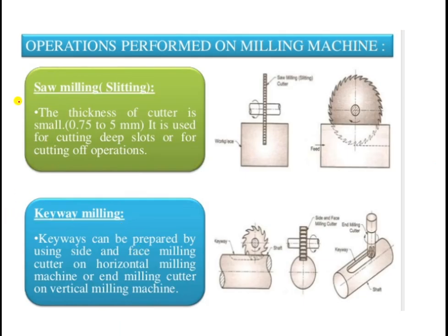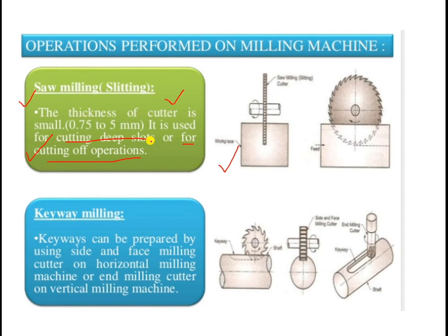Another operation is saw milling, which is a slitting operation used to create a certain separation in parts. The thickness of the saw milling cutter normally ranges from 0.75 to 5 millimeters. It is used for cutting deep slots or for cutting-off operations, but is generally used for cutting deep slots having a certain depth.